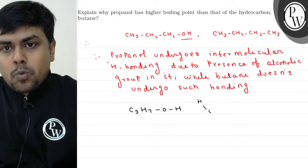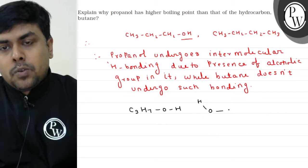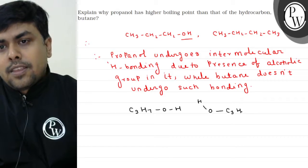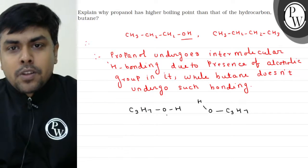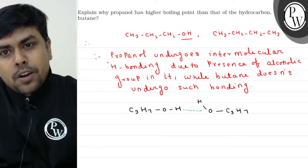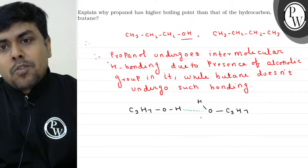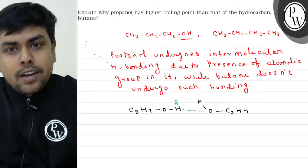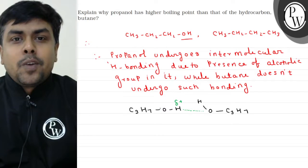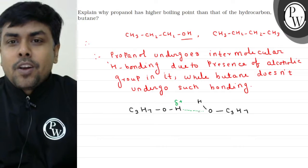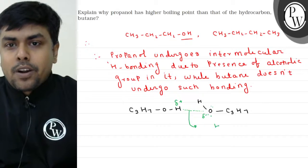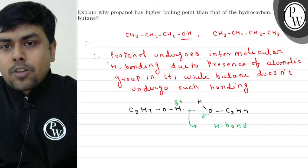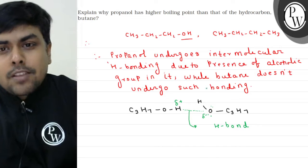Now, between two propanol molecules, the hydrogen connected to oxygen — is hydrogen ke upar delta positive charge hota hai, because it is connected to electronegative element O. And the bond formed is an H-bond.